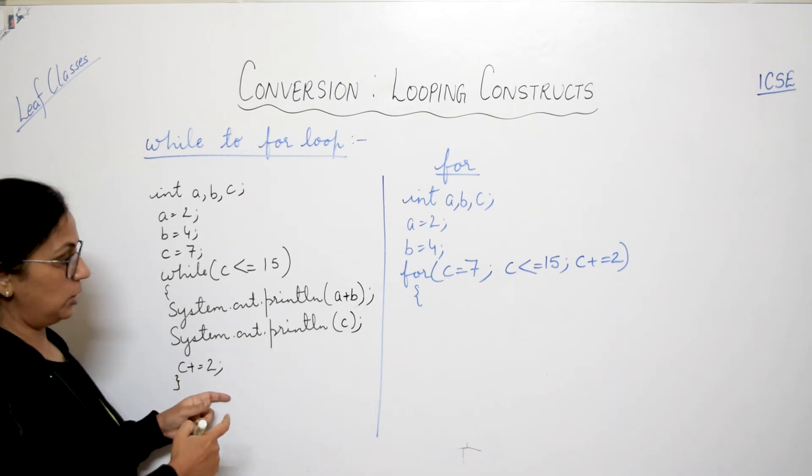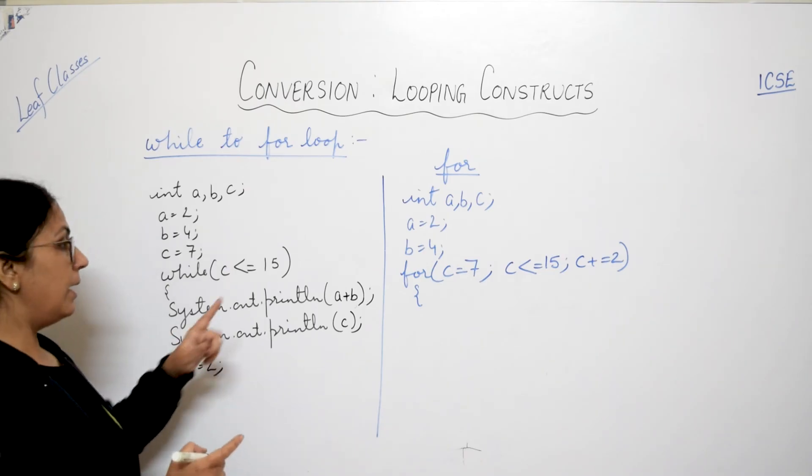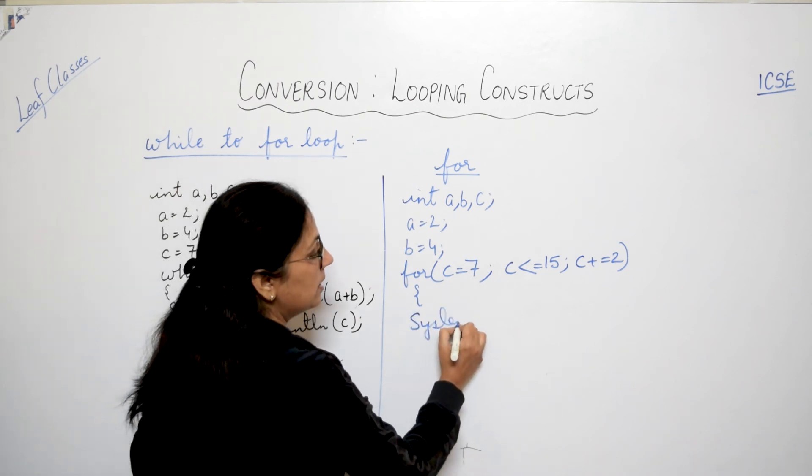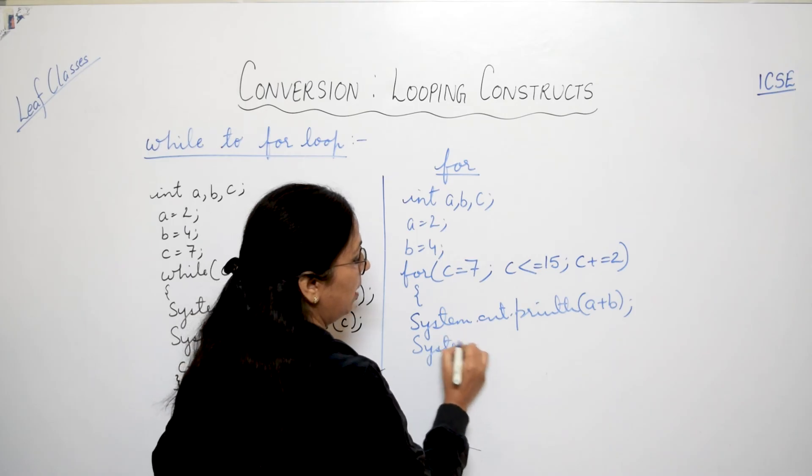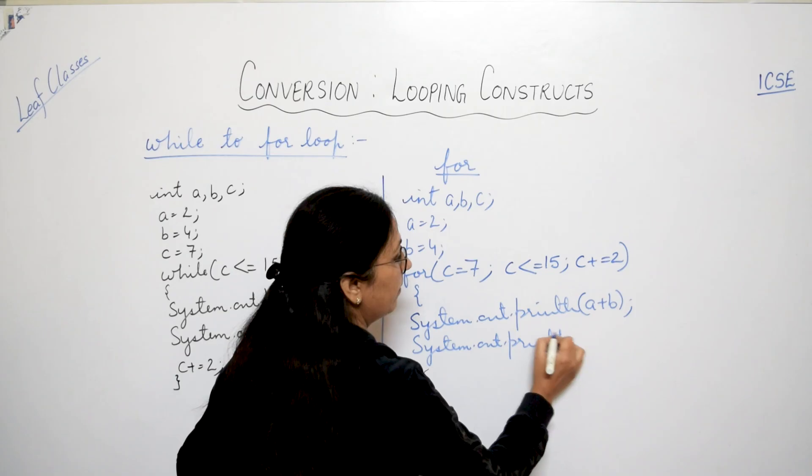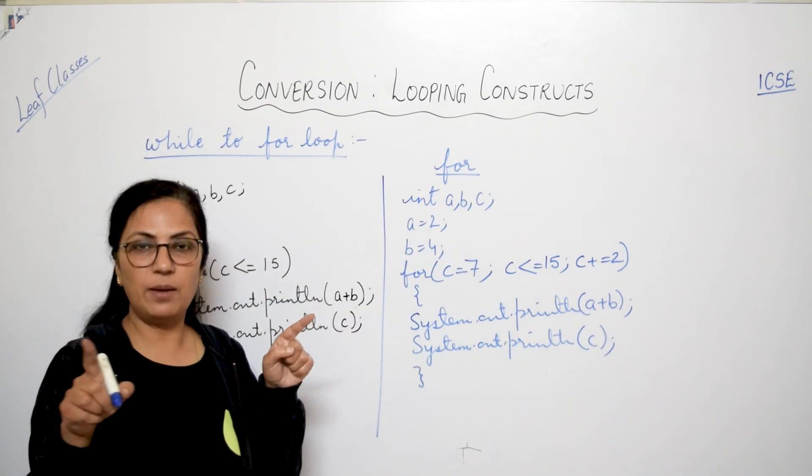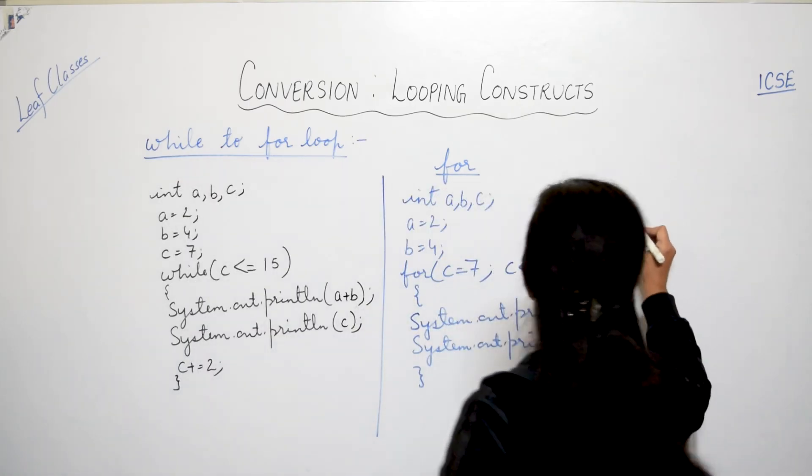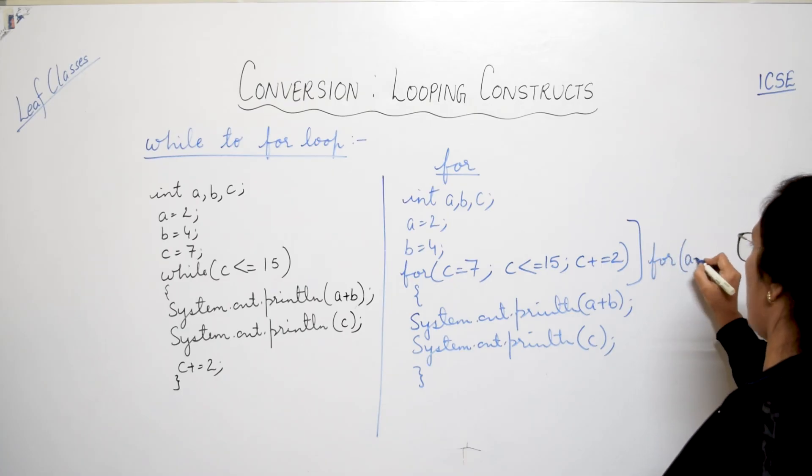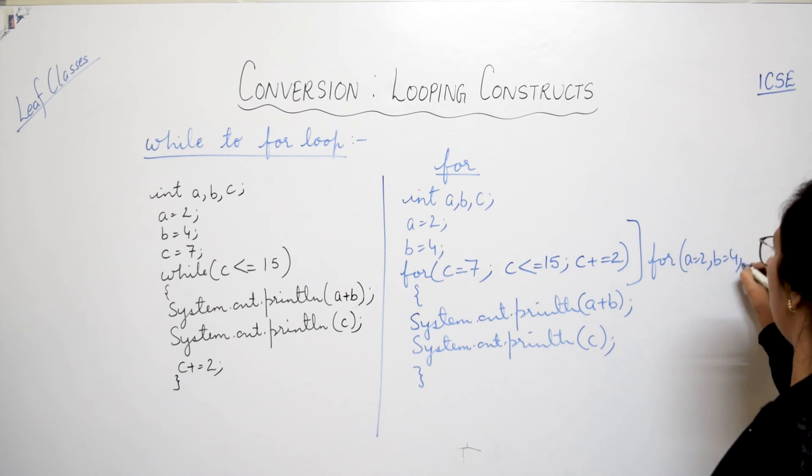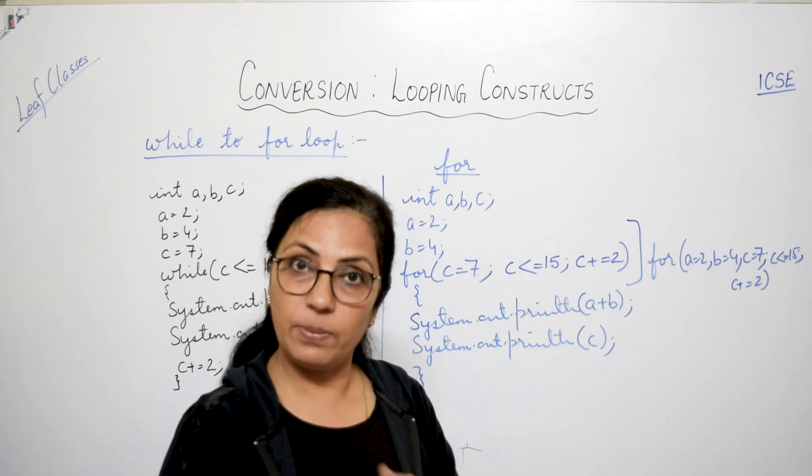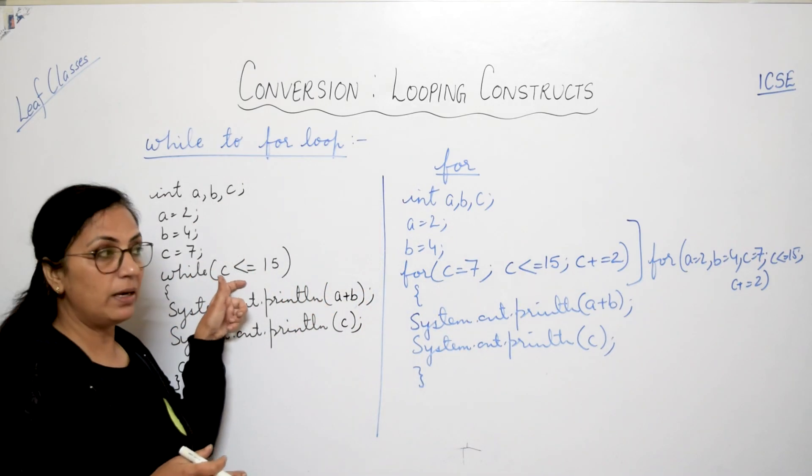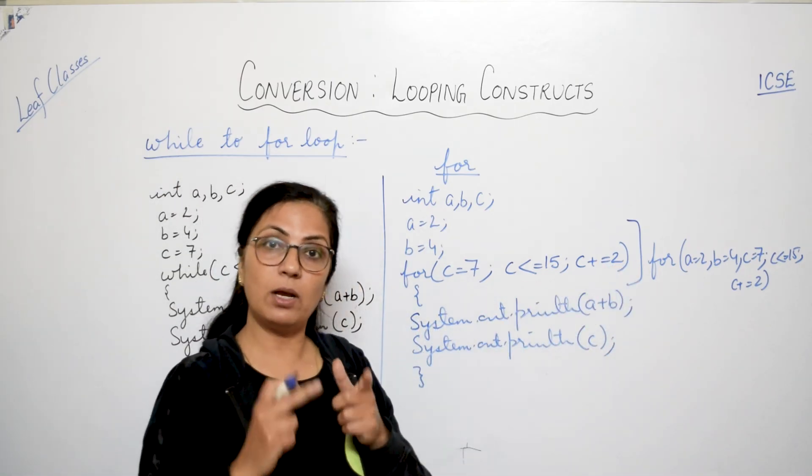Is expression go chhodke baakhi jitne bhi statements hain, as it is you will write in this for also. So here you will write system dot out dot println a plus b and system dot out dot println c. Children again I am repeating, please don't write the entire programming in class. Now children here in place of this, I can write like this also: for a equals to 2, b equals to 4, c equals to 7, yaha pae separated by comma, and then c less than equals to 15, c plus equals to 2. Like this. So initialization hap ek se jahada variables ka abhi kar satte hain in for loop. But when you are converting, please check control variable kaun sa hai and condition kis variable pe de reyo. According to that only you will be doing.